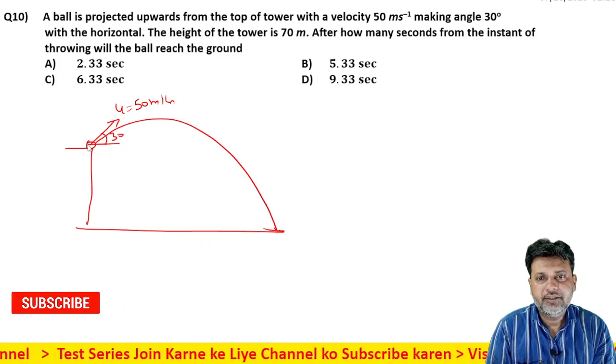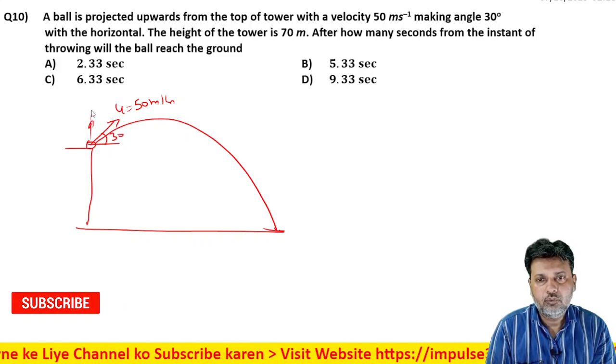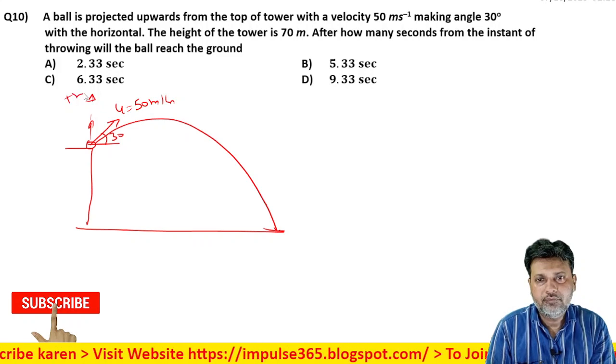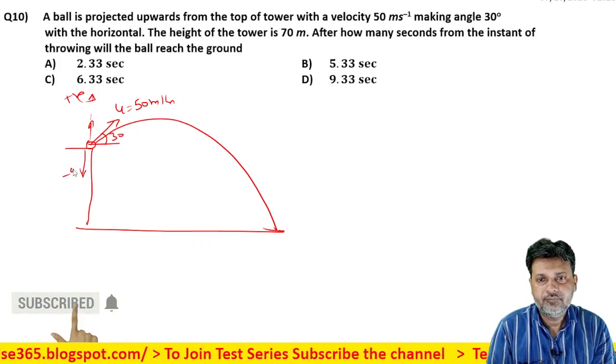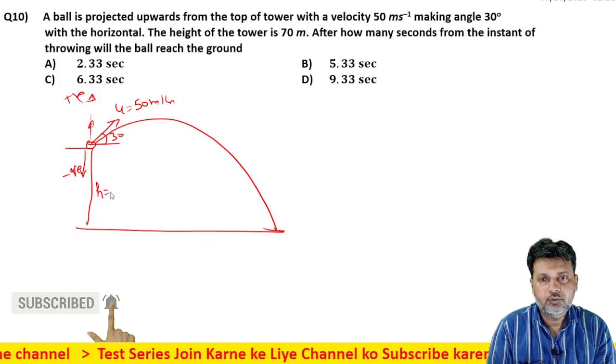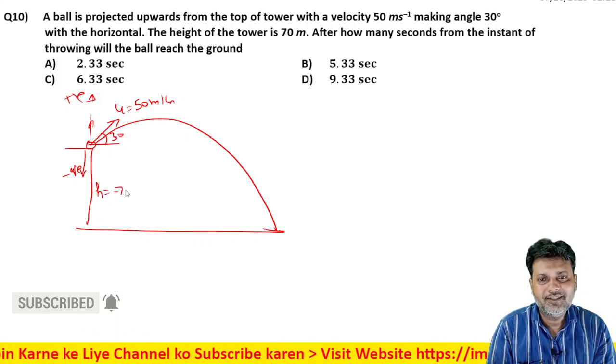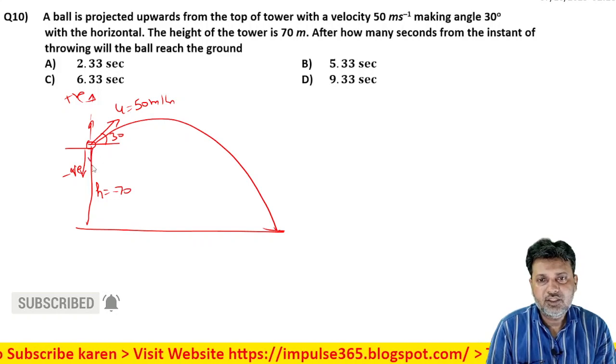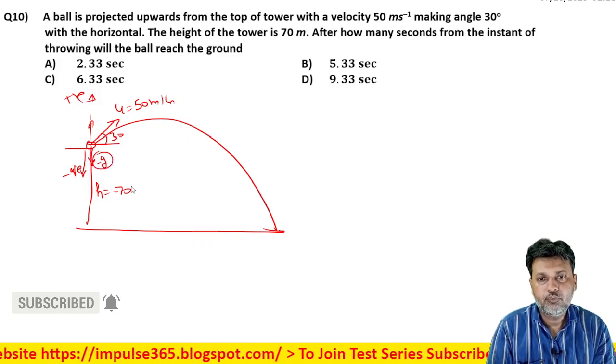Direction motion - upar ka taraf hai, or right side. Toh upar ka direction kya hoga? Positive. Or niche ka direction negative. Or height of the tower h negative hoga, jo ki 70 meter hai, toh minus 70 hoga. Athar ji niche hai, toh ji bhi negative hoga.